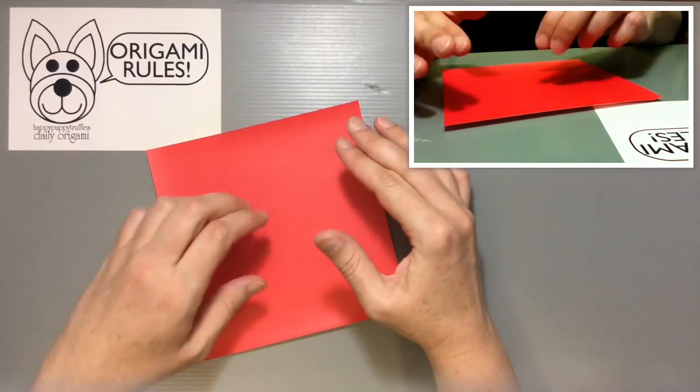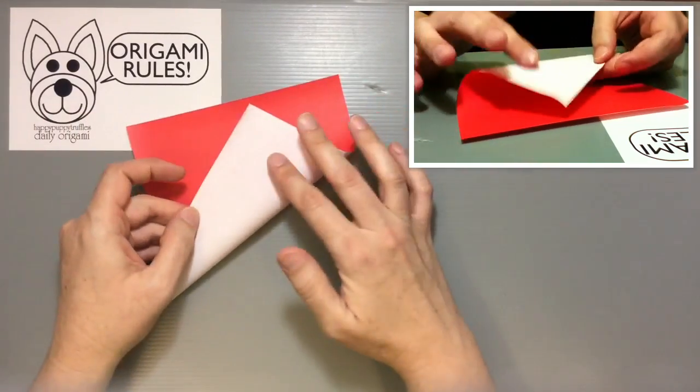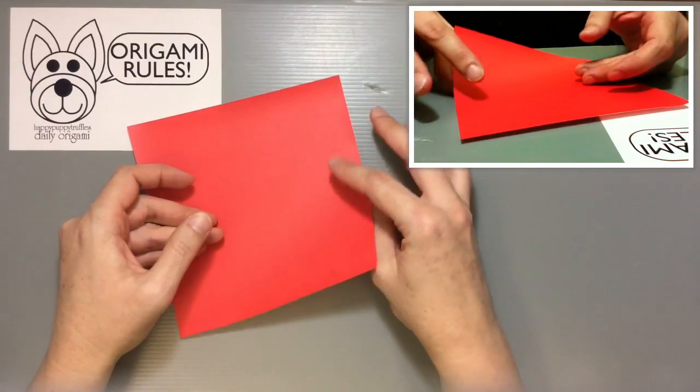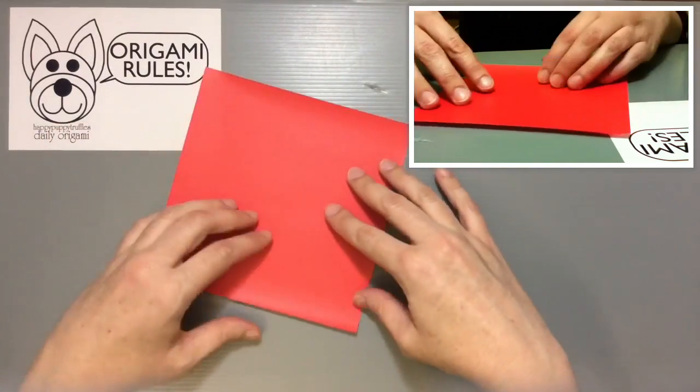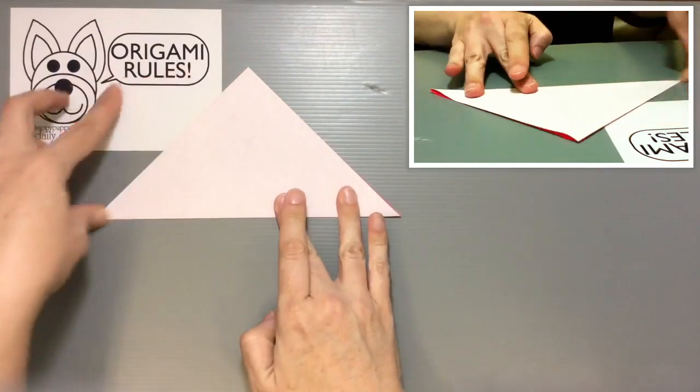We're going to start off here. The general result takes good use of having double-sided paper, so if you have that, it really helps. With the color side facing up, I'm just going to fold my paper in half diagonally both ways.